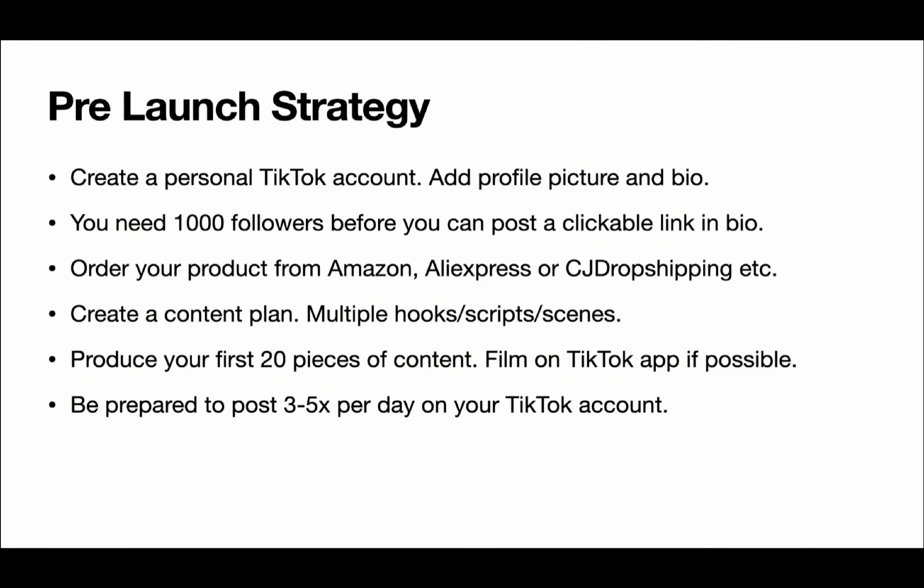After you've ordered your product, you want to go ahead and create a content plan. A content plan is a list of all the content you're going to create — have multiple hooks, scripts and scenes. To get ideas for content, I'll show you how to do that in a separate video. But for the most part, you want to search your product name into TikTok and see what other people are doing, then create a list of content you're going to film.